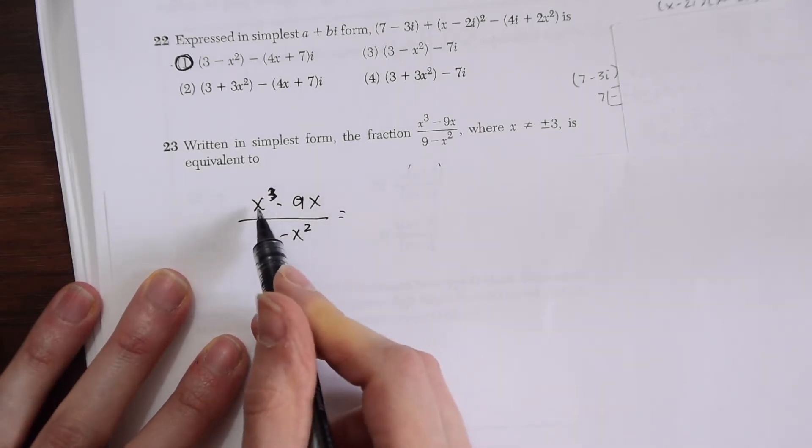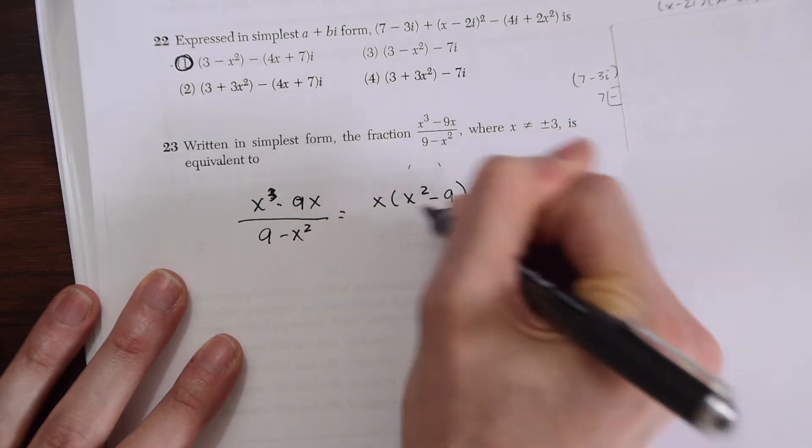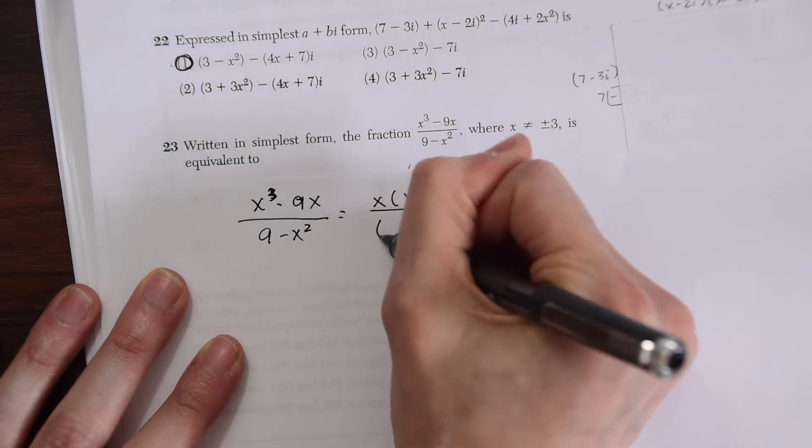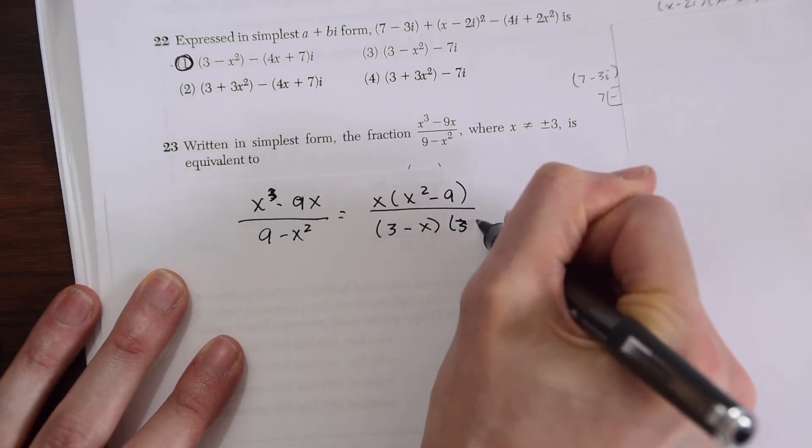We have x cubed minus 9x all over 9 minus x squared. Right away we could take on the numerator a GCF of x, we're left with x squared minus 9. On the bottom we can do difference of two squares and do 3 minus x and 3 plus x.